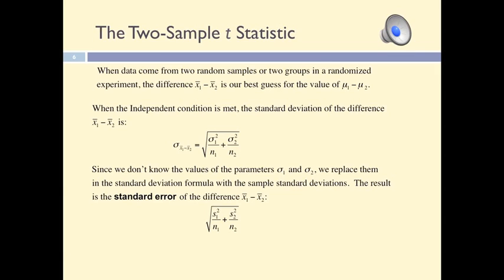However, most of the time we don't know the population standard deviations, so we will use T procedures to make inferences. In this case, we estimate the standard error of the difference using the standard deviations of the samples. So the standard error of the mean difference between the two groups can be obtained simply by replacing sigma with s in the formula.